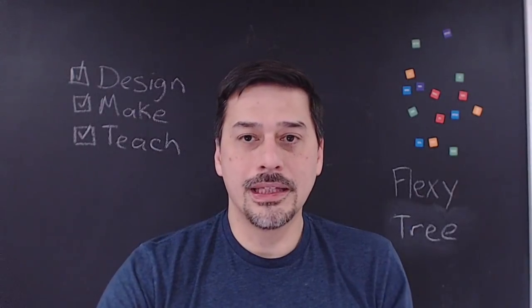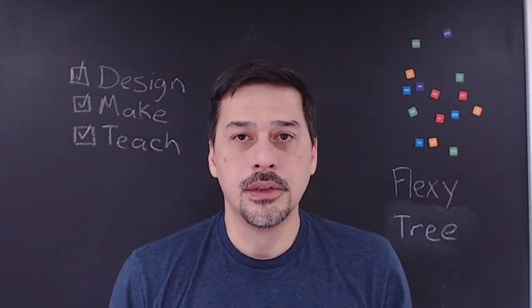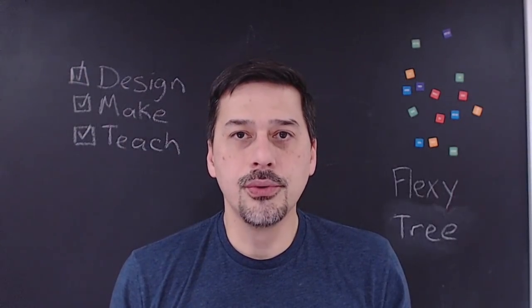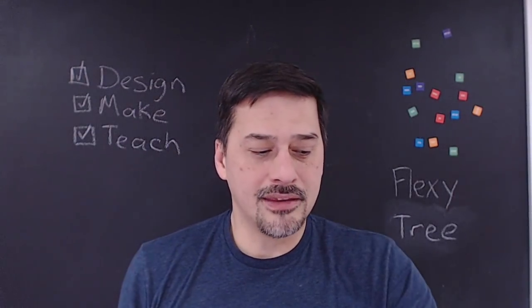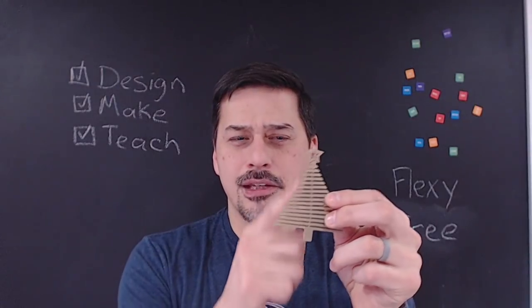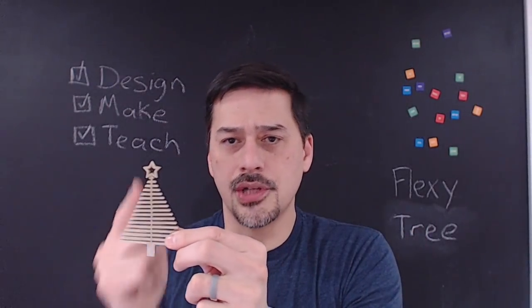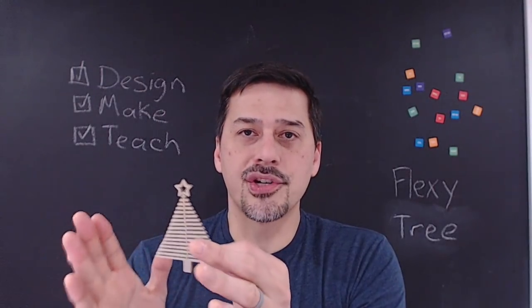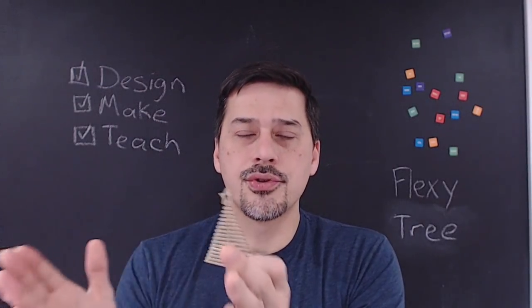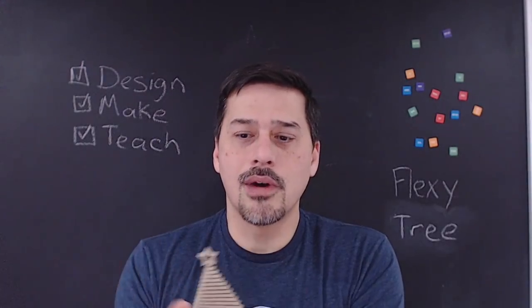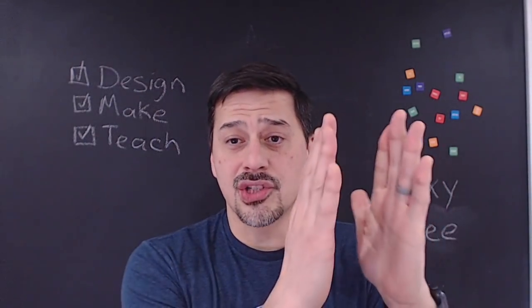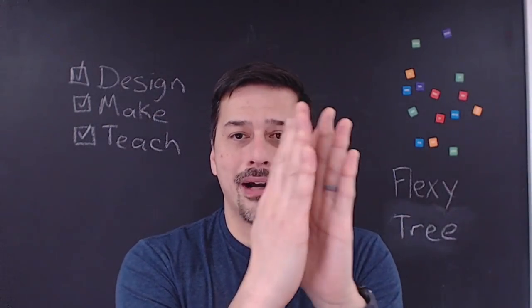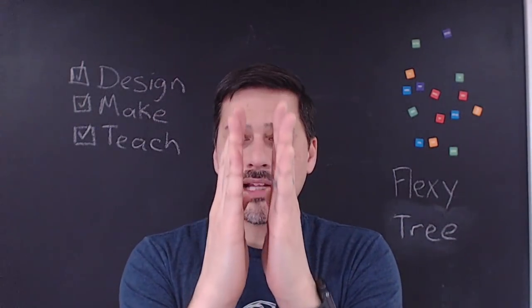One thing that's really important for you to look at when you're printing this is the slicer preview. And when you look at that central spine, for this one I have it at 0.6 millimeters, but you might have to adjust to 0.8 or 1.2. So you want it to be a multiple of your extrusion width. So if your extrusion width is 0.4, you're going to want it to be a multiplier of that. Now, when you look in your slicer, you want those lines on the spine to be parallel to each other. That's going to give you strength.